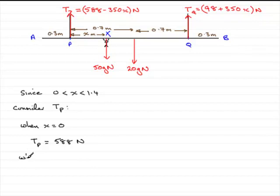And then when x is at the other extreme at 1.4, when the gymnast is down here, the tension in the rope at P, TP, will be 588 minus 350 times 1.4. Let's just write that down here, 588 minus 350 multiplied by 1.4.